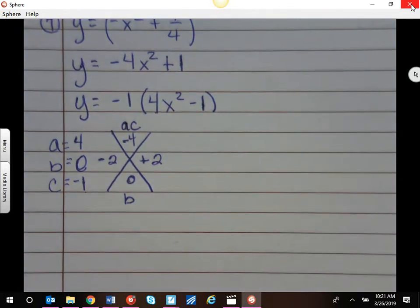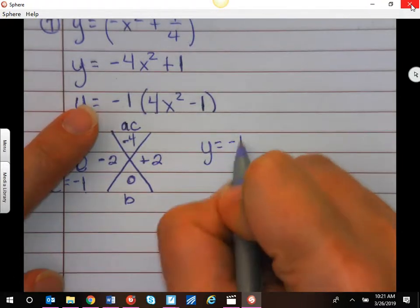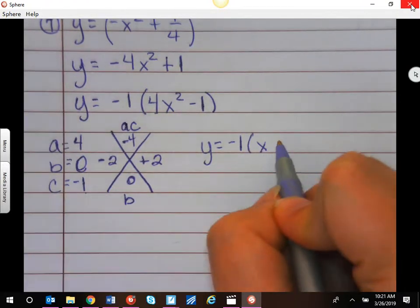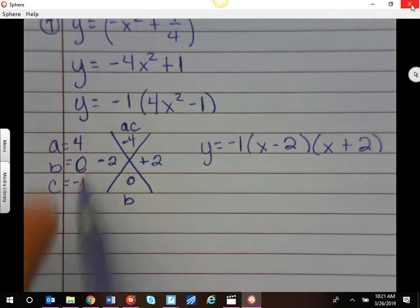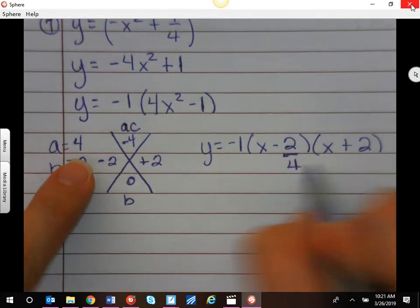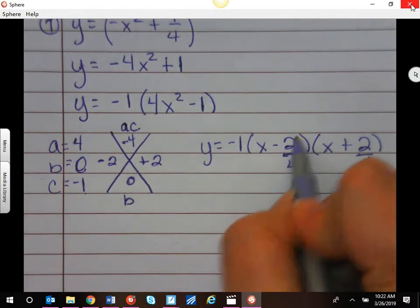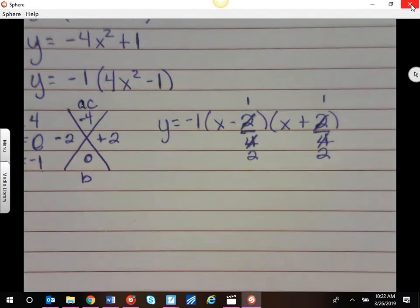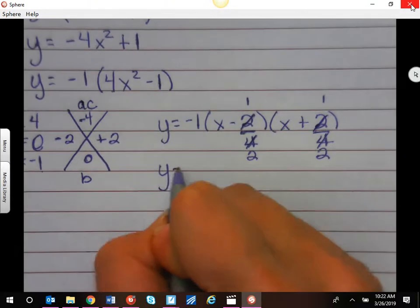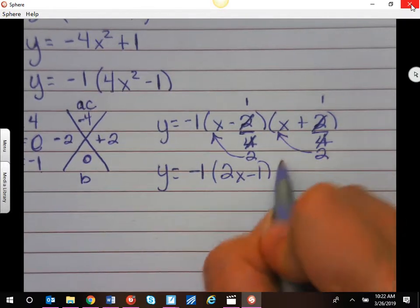This is where it gets a little tricky, remember, a is not 1, we're going to have to swing. I have x minus 2, and I have x plus 2, but remember, a is not 1, so I have to swing. I have to divide my factors by 4, we did that a way long time ago. We can simplify this, 1 and 2, 1 and 2.